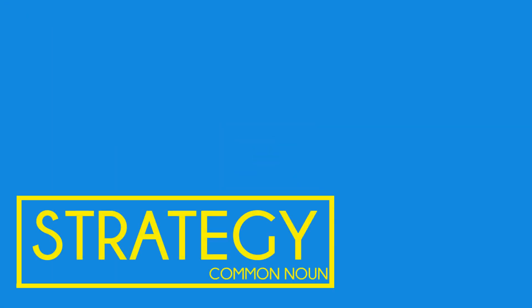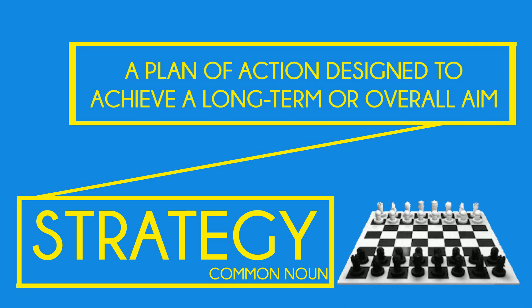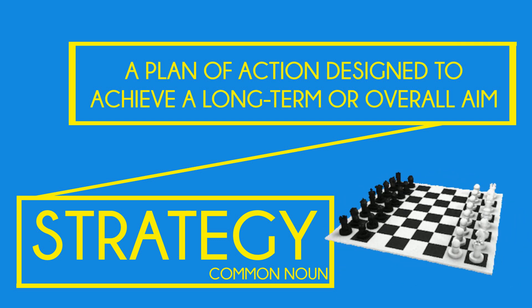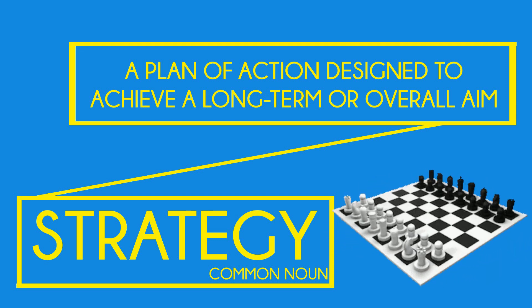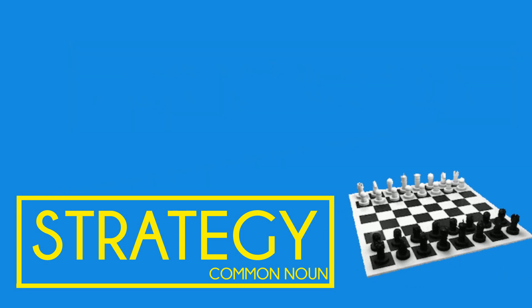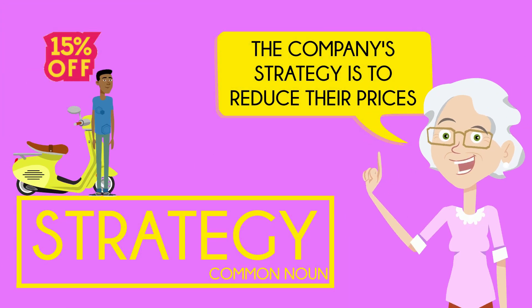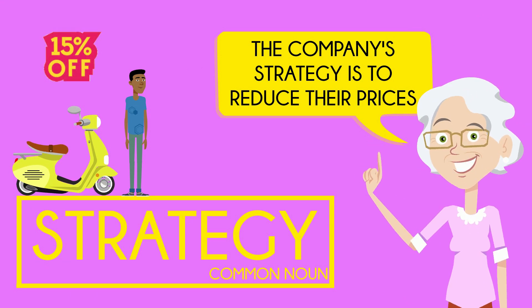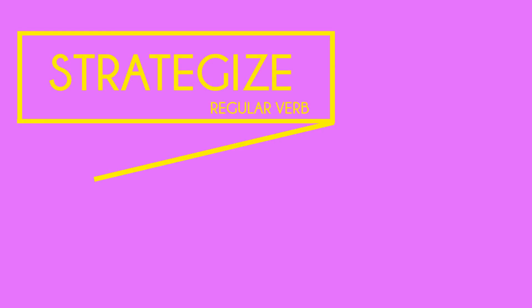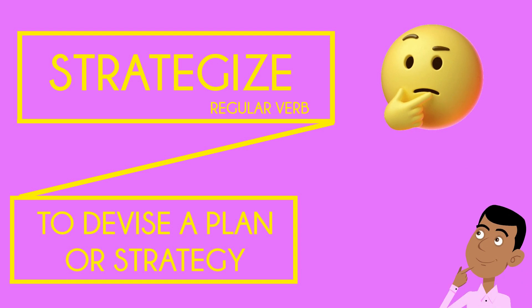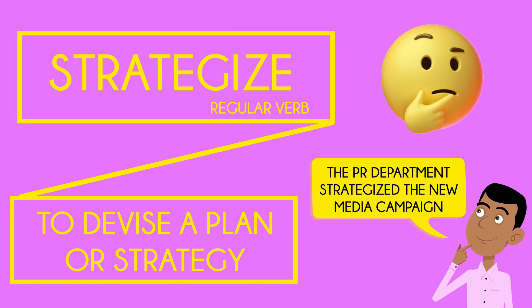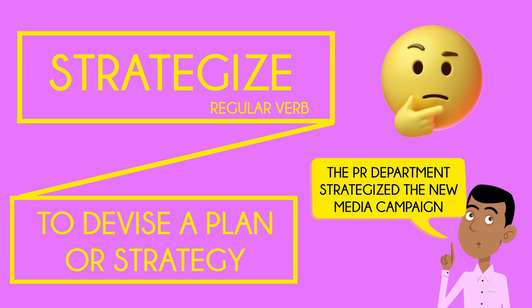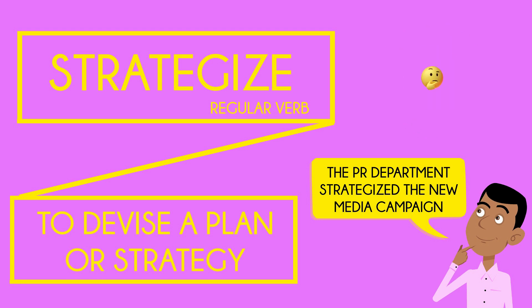If you have an agenda you will need a strategy. A strategy is a plan of action designed to achieve a long-term or overall aim. Example sentence: the company's strategy is to reduce their prices. The verb form of this word is 'to strategize', meaning to devise a plan or strategy. For example: the PR department strategized the new media campaign.